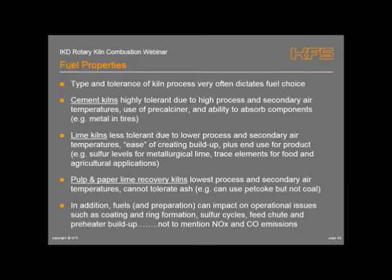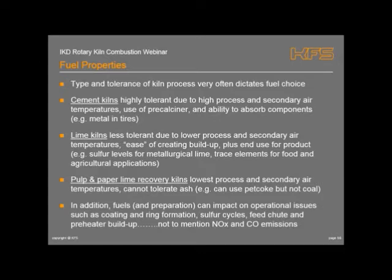Rock lime kilns are less tolerant due to lower process and secondary air temperatures coming through the cooler, which can lead to some build-up. Ash ring formation is a kind of issue in lime kilns, plus the potential for some sulphur levels in the metallurgy, especially if you're making lime for the food industry or agricultural applications. Those in the paper industry have the least tolerance for using alternative fuels, particularly with contaminants, because they get into the process and lead to a lot of rejects. Coal can't be used in the paper industry because of the inert ash content, which contaminates.